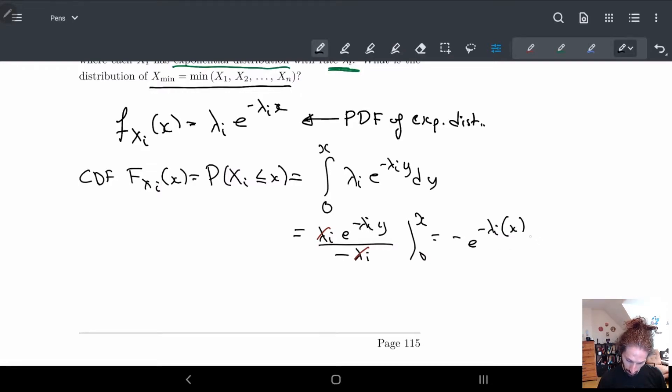So we have -e^(-λᵢx) minus -e^(-λᵢ·0). So we have minus minus is plus, e^0 is one, so one minus e^(-λᵢx).